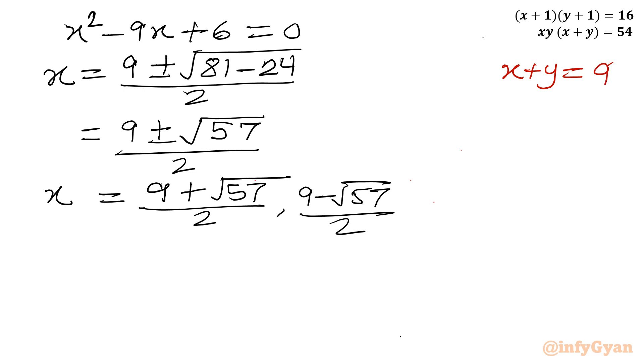So from here I can write y will be 9 minus x. So once x is (9 + √57)/2, y will be 9 minus x, so 9 minus (9 + √57)/2.